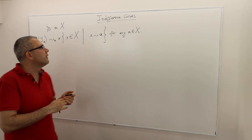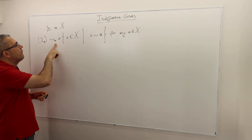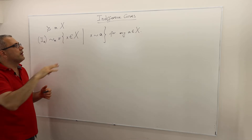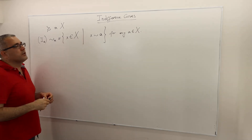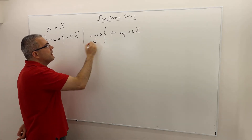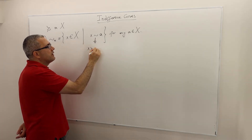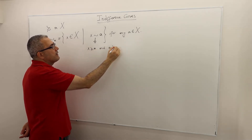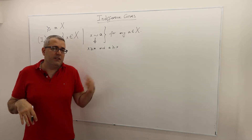The indifference curve belongs to an alternative. The indifference curve of alternative a is the set of other alternatives which are indifferent to a according to this preference relation. Indifference basically means x is at least as good as a, and a is at least as good as x — so you are indifferent between choosing a or x.